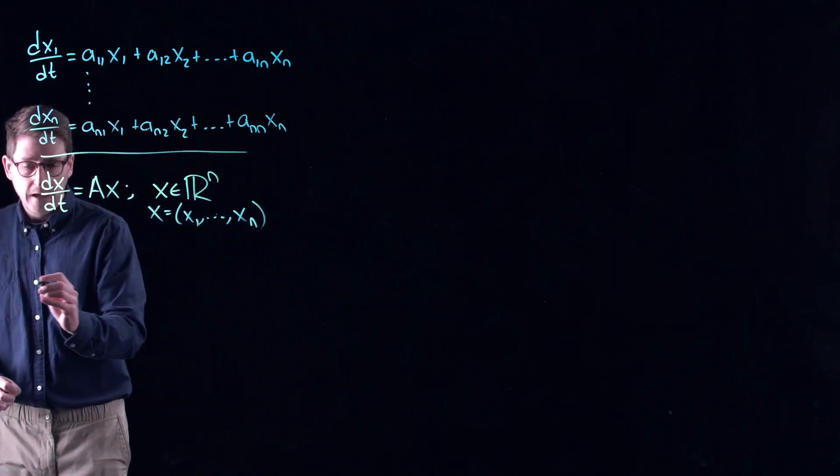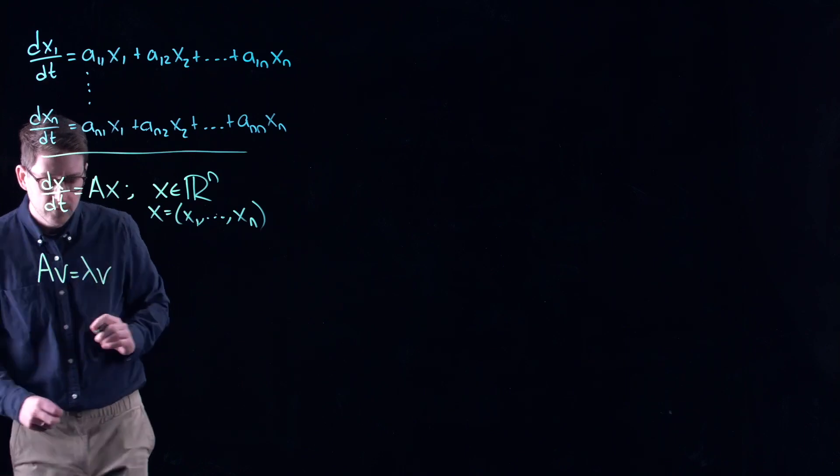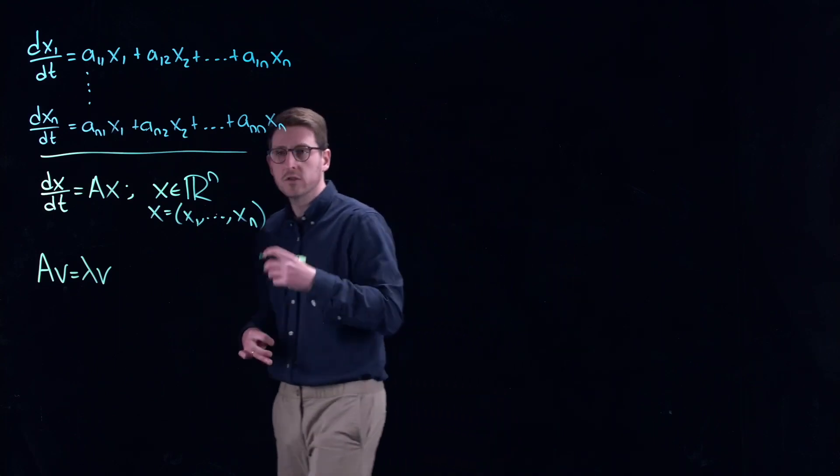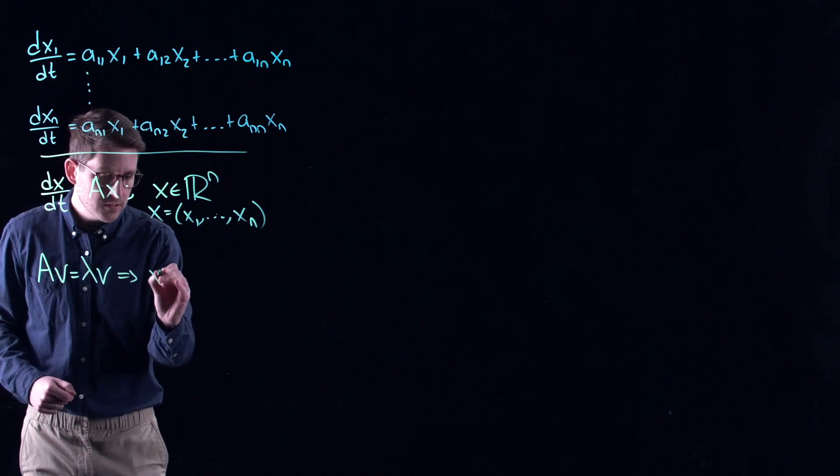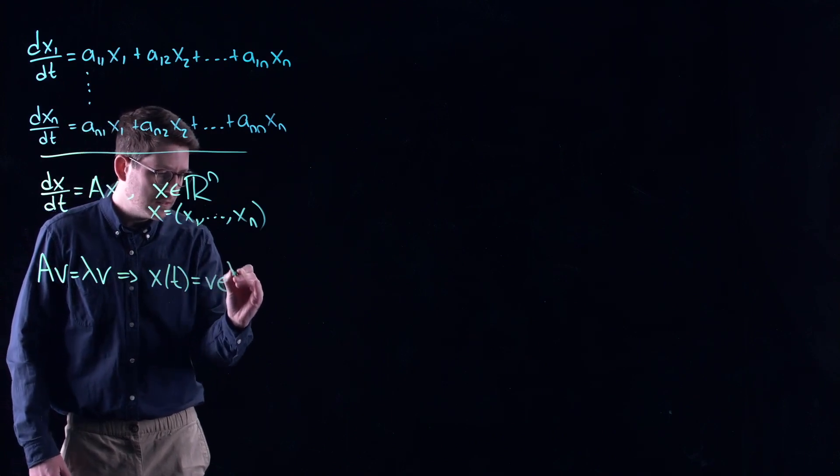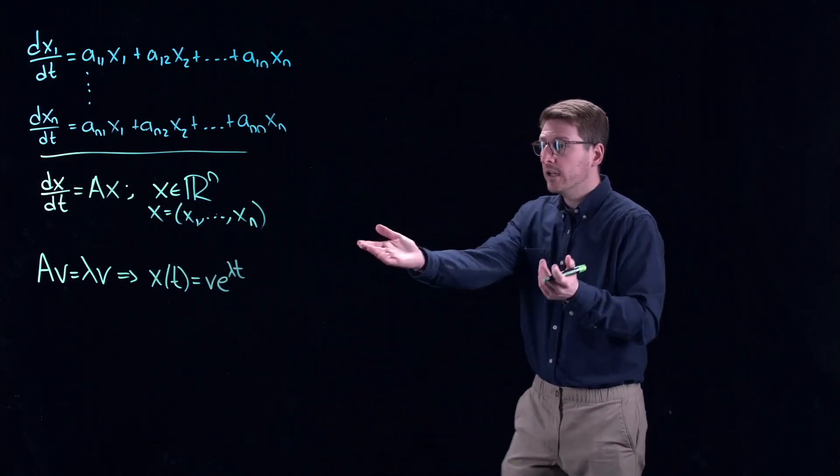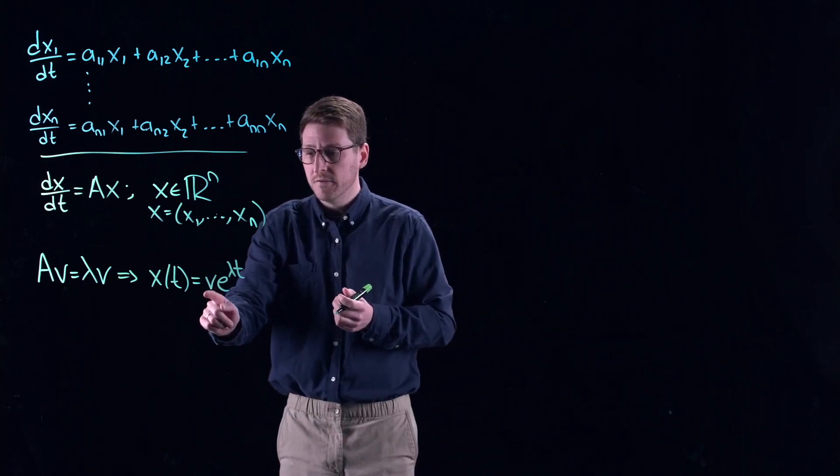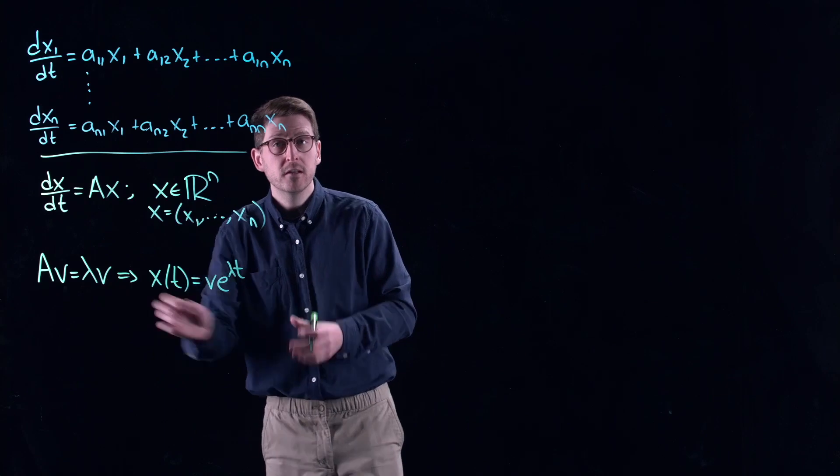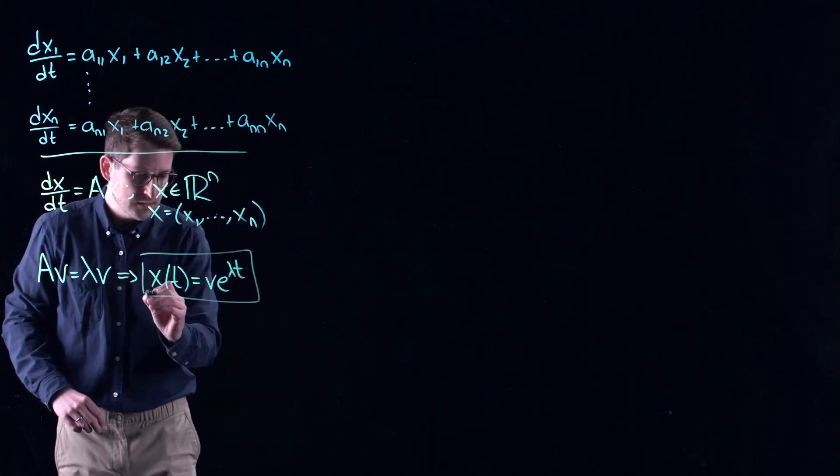So how do we do this? We could say that if we have an eigenvalue and an eigenvector of the matrix A, so let's say Av = λv - this is the usual eigenvalue eigenvector relationship, v is a vector here, lambda is just a number - well, this leads to a solution to my differential equation, which is the eigenvector v times e^(λt). You can easily check: if you differentiate this you get λv*e^(λt), and if you multiply A on the left side, the Av becomes λv, giving you exactly the differential. So that's why I wrote it in this matrix notation so that you can easily see that this is a solution to this thing.